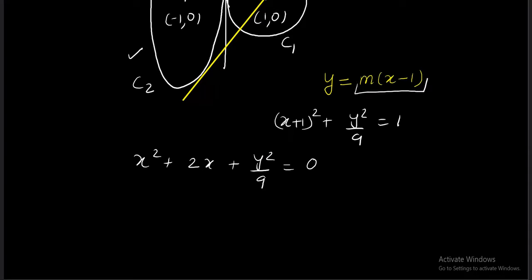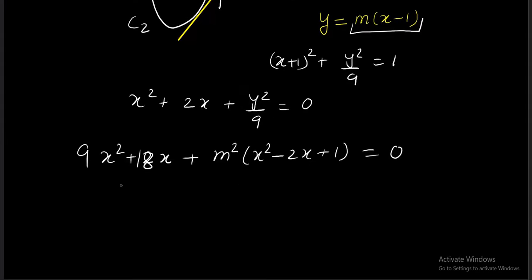Now I have to make it a tangent to this ellipse. The ellipse equation is x plus 1 square plus y square by 9 equals 1. Keeping y equals m times x minus 1 everywhere, we will get 9 plus m square into x square plus 18 minus 2m square into x plus m square equals 0.